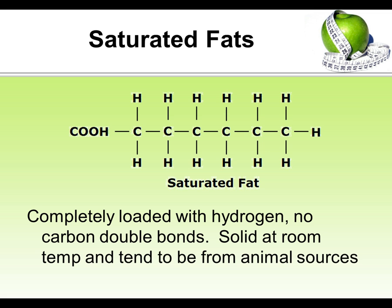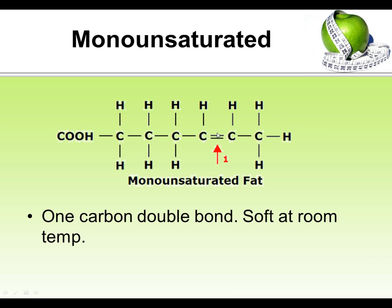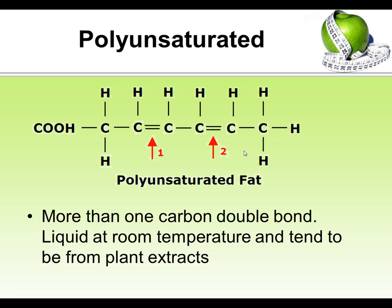Looking at the structure, saturated fat has single bonds connecting the carbon atoms and is normally solid at room temperature. Monounsaturated fat has one double bond and tends to be soft at room temperature. Polyunsaturated fat has at least two double bonds connecting carbon atoms, making it liquid at room temperature. That's about it for this video and we'll progress this further in class.